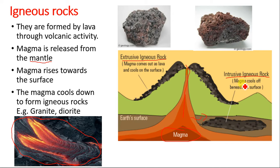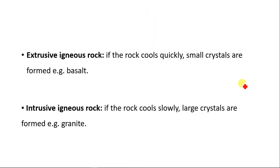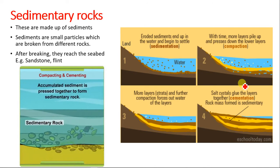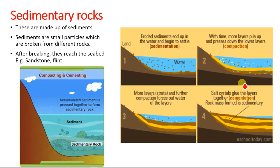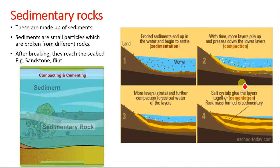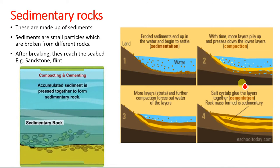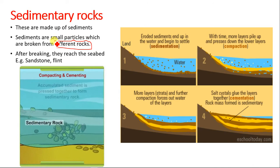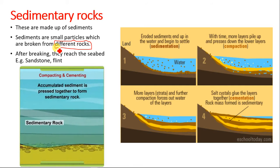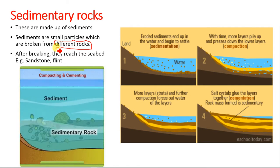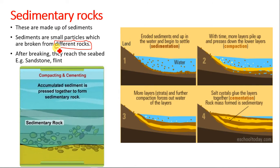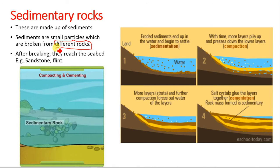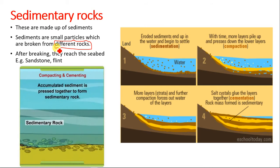Sedimentary rocks are made up of sediments. Sediments are small particles broken from different rocks — they can be broken from sedimentary, igneous, or metamorphic rocks. They are broken down as a result of weathering, then transported by erosion and accumulated in the seabed, where sedimentation and compaction take place to form a sedimentary rock.